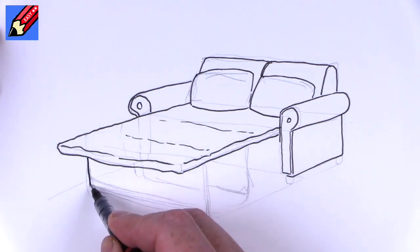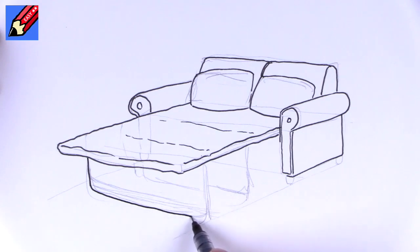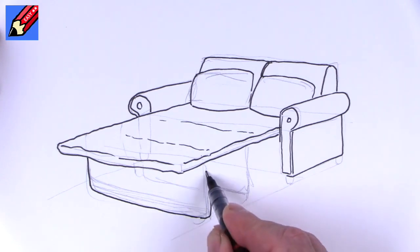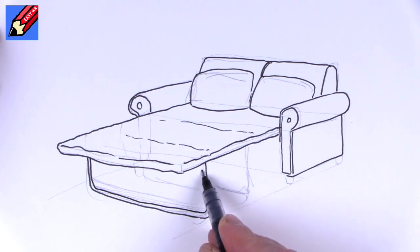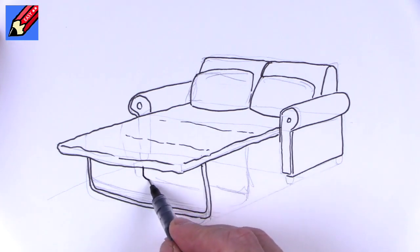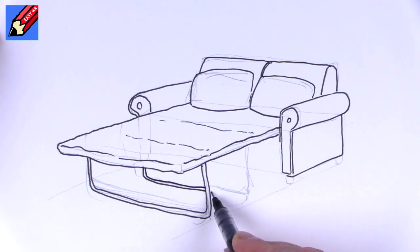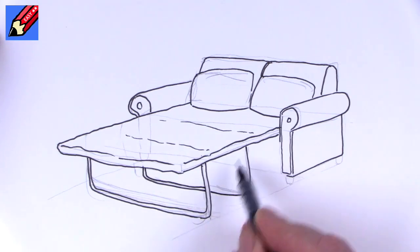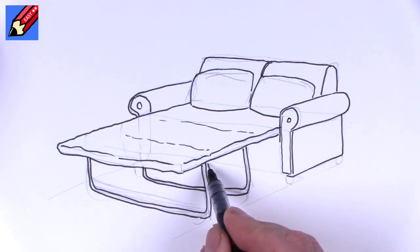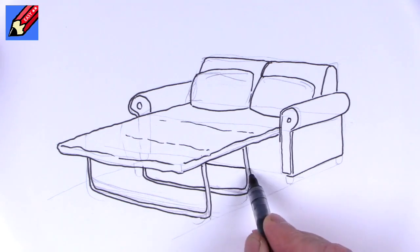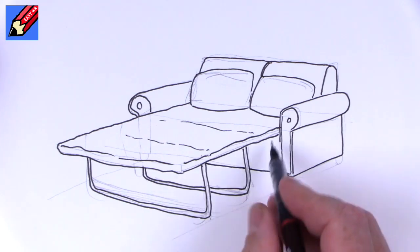We're going to want these legs, these sort of fold up legs, and they're going to come around there. And then this will come here, and because it's behind that will stop there, and then it will carry on on the other side like that. And then we can draw the bottom of the sofa like that.